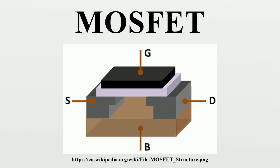The metal in the name MOSFET is now often a misnomer because the previously metal gate material is now often a layer of polysilicon. Polysilicon had been a gate material until the mid-1970s, when polysilicon became dominant due to its capability to form self-aligned gates. Metallic gates are regaining popularity, since it is difficult to increase the speed of operation of transistors without metal gates. Likewise, the oxide in the name can be a misnomer, as different dielectric materials are used with the aim of obtaining strong channels with smaller applied voltages.